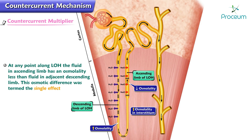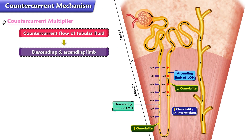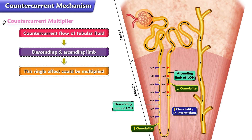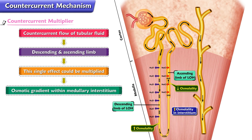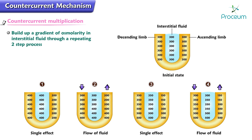At any point along the loop of Henle, the fluid in the ascending limb has an osmolality less than the fluid in the adjacent descending limb. This osmotic difference was termed the single effect. Because of the counter-current flow of tubular fluid in the descending and ascending limbs, this single effect could be multiplied, resulting in an osmotic gradient within the medullary interstitium where the tip of the papilla has an osmolality of 1200 milliosmoles per kg water compared to 300 milliosmoles per kg water at the corticomedullary junction.